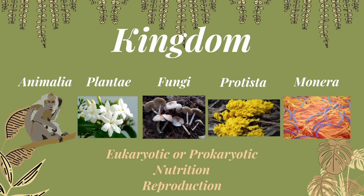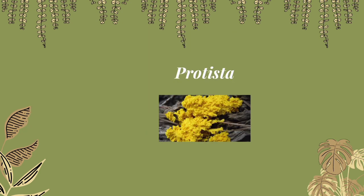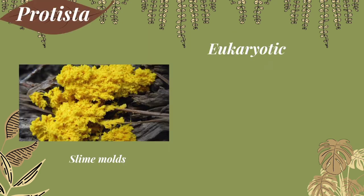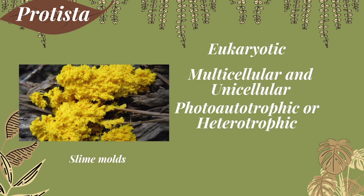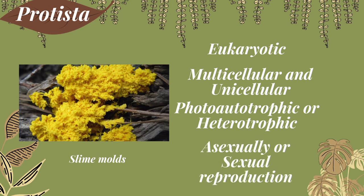Now, the fourth kingdom: the Protista. They are eukaryotic, unicellular, and a few are multicellular. Protista can be found in freshwater, marine, and most terrestrial habitats, or they live symbiotically with their host bodies. Protista can gain nutrition by being photo-autotrophic or heterotrophic. In mode of reproduction, all protists can reproduce asexually, but some also have sexual reproduction.